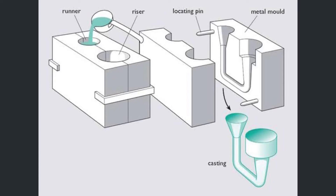The molten metal is poured into the mold and no external force is applied while pouring. Only gravitational pull is used to fill the metal in the mold. After solidification, the mold pieces are declamped or separated and the final component is removed from the die. Gravity die casting has a very high surface finish.